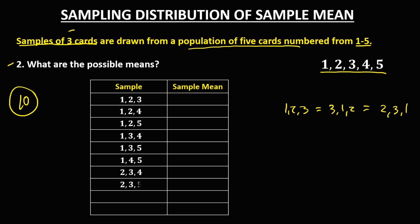Continuing the list of samples: 2, 3, 4 — then 2, 3, 5 — then 2, 4, 5 — and finally 3, 4, 5. So these are the 10 samples.